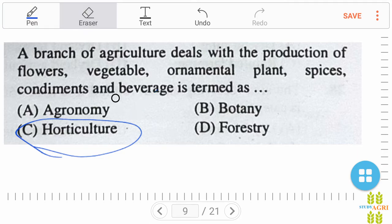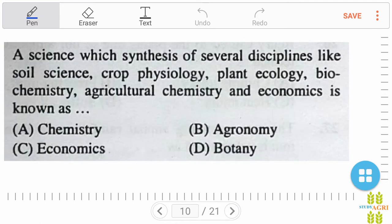A science which is the synthesis of several disciplines like soil science, crop physiology, plant ecology, biochemistry, agricultural chemistry, and economics is known as? Right answer is agronomy.